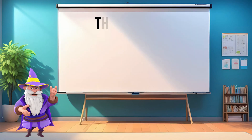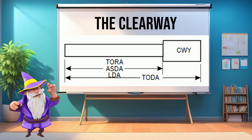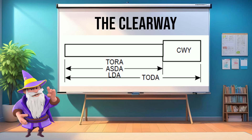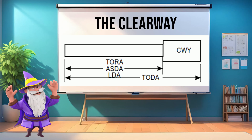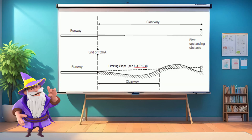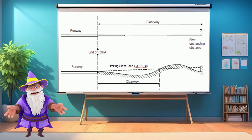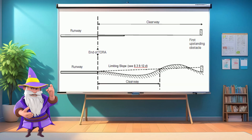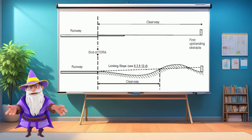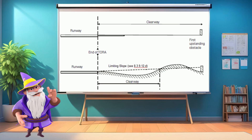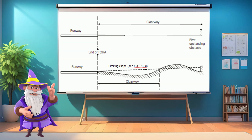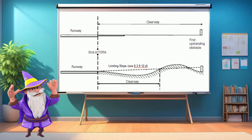Now, let's talk about the clearway — a critical part of takeoff distance available. A clearway is an area beyond the paved runway that is free of obstacles and specifically designated for aircraft to safely climb out after takeoff. It's usually an extension of flat terrain, water, or specially prepared ground, but it is not a surface meant for rolling or accelerating. It's strictly for airborne aircraft.